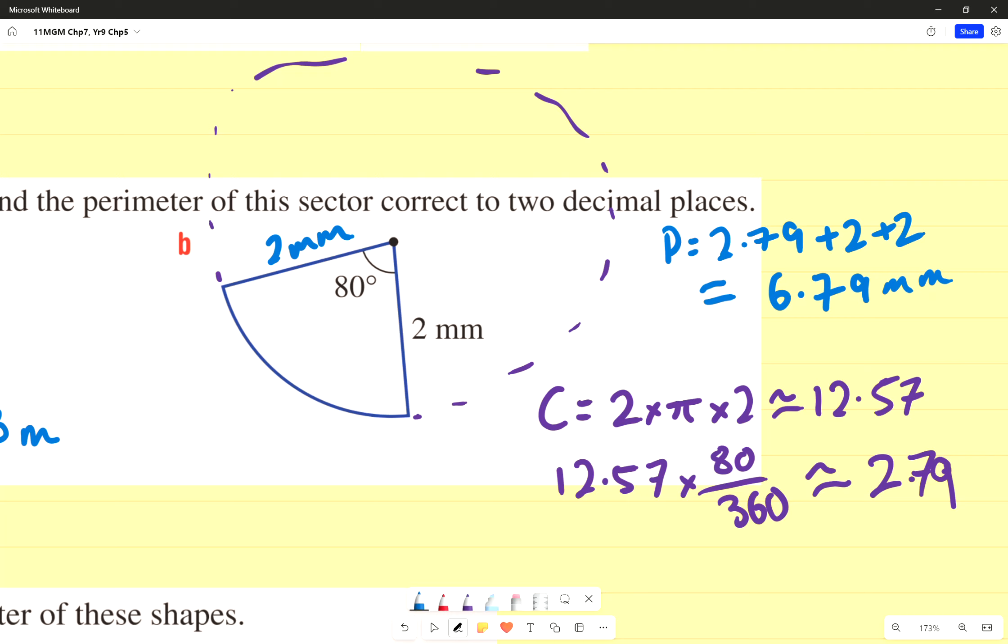So just to recap what I've done with this question, all I did was imagine it's a whole circle. I find the circumference of that, and I just section it off into what I want. In this case, it's 80 degrees, not 80%. Do not make that mistake. It's 80 degrees out of a total of 360, so I'm just going to times it by 80 over 360.